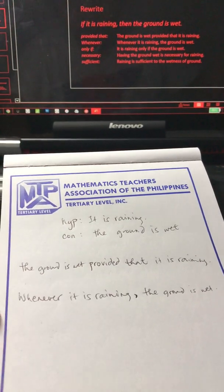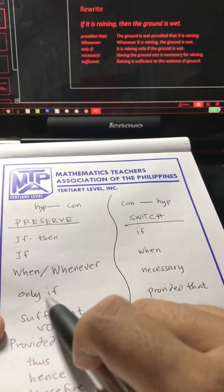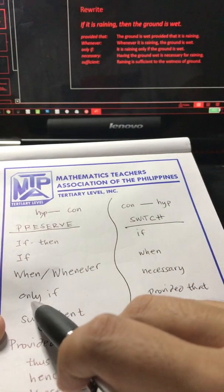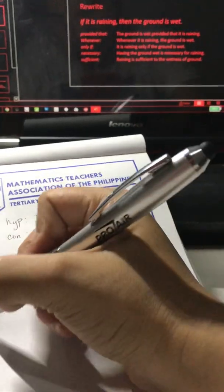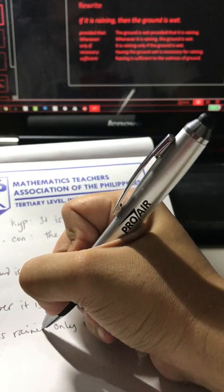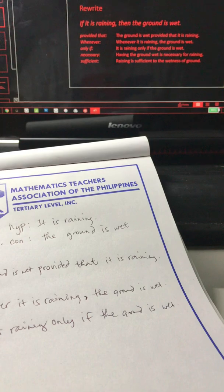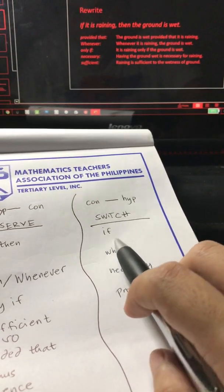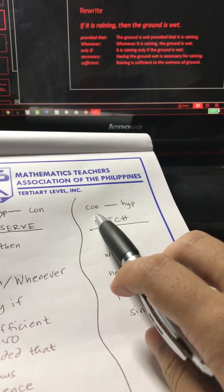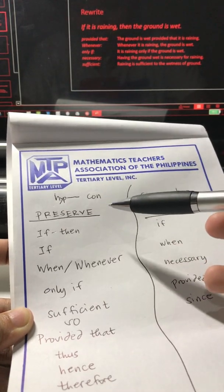Next, we use 'only if.' Only if is under the preserved part, so hypothesis comes first, then the conclusion: 'It is raining only if the ground is wet.' Be careful because 'only if' is different from 'if' and 'if only.' If and 'if only' at the middle of a statement would switch — conclusion comes first, then hypothesis — unlike 'only if,' which is always hypothesis only if conclusion.